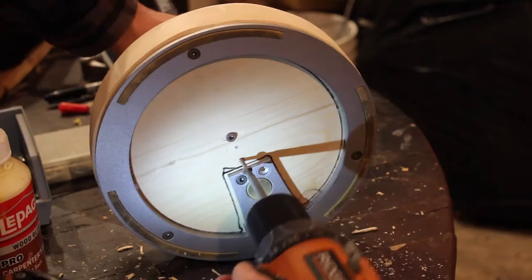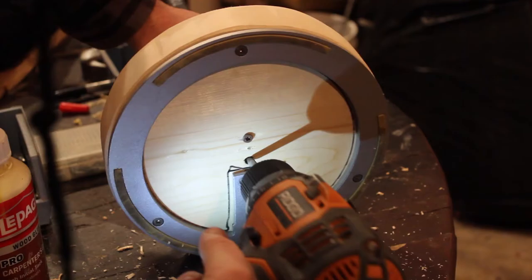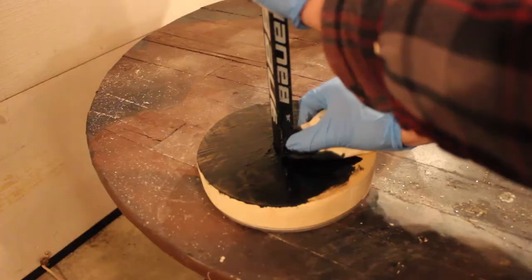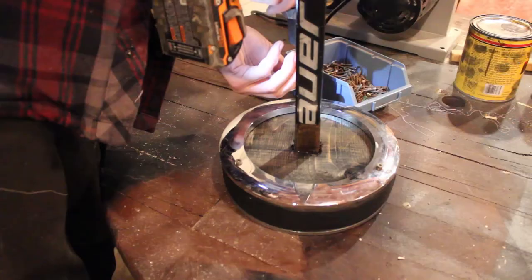The next step was to notch out a hole into the wooden base to glue and screw the hockey stick into it. I then applied a coat of stain and I also attached the chrome banding that originally came with the monitor stand.